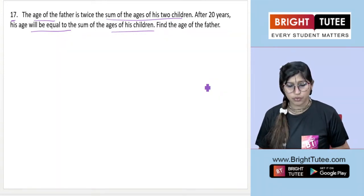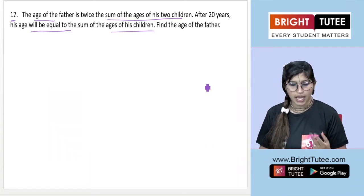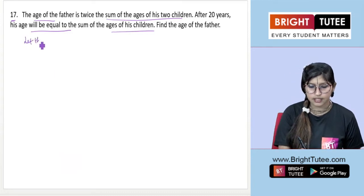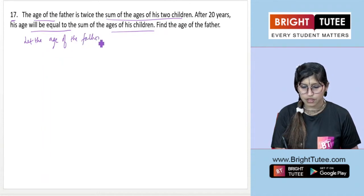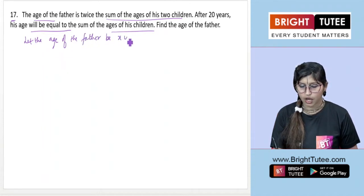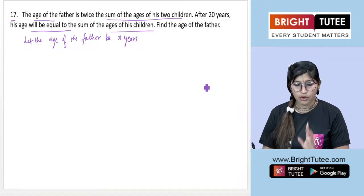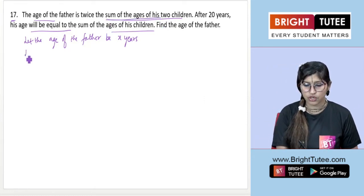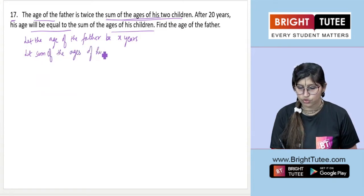We'll start the solution. We have a pair of linear equations in two variables and we need to find the age of the father. So the first thing is: let the age of the father be x years.